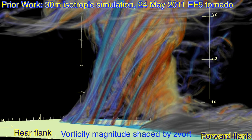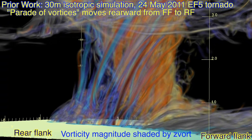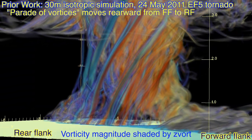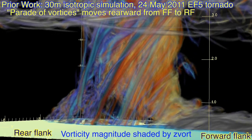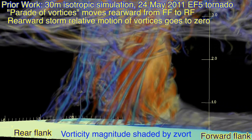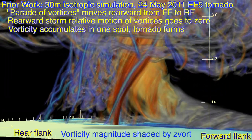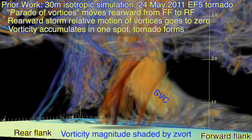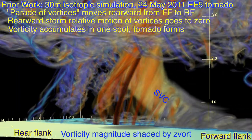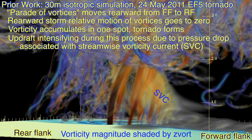Some of the earlier work — this is from our 30-meter simulation looking at the vorticity field shaded by the vertical component of vorticity. Before tornado genesis, you see these erect vortices — blue and red referring to cyclonic and anti-cyclonic. They're basically a parade of vortices moving from the forward flank to the rear flank. This parade keeps going for a while, and it isn't until the leading member stops and things pile up in one spot that you start to see the tornado form. The tornado seems to form as an accumulation of vorticity, and concurrently we have this streamwise vorticity current going on in the forward flank.